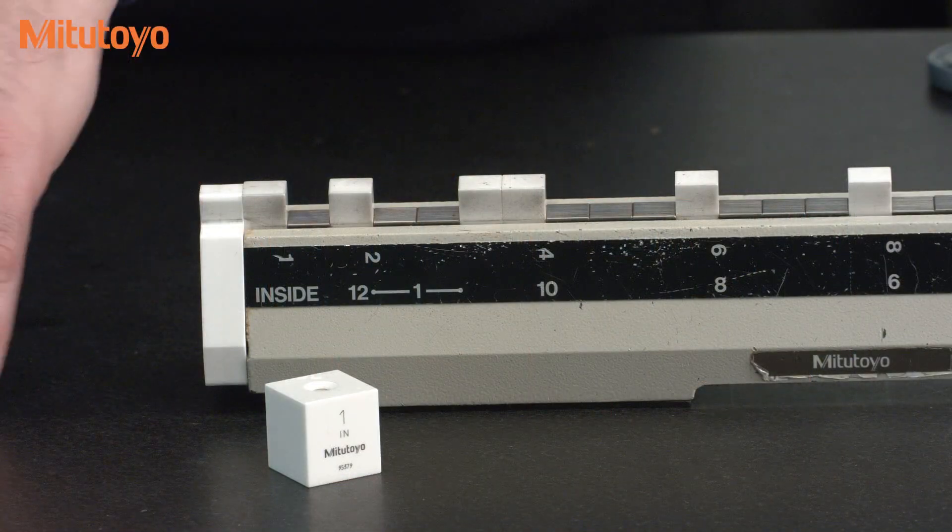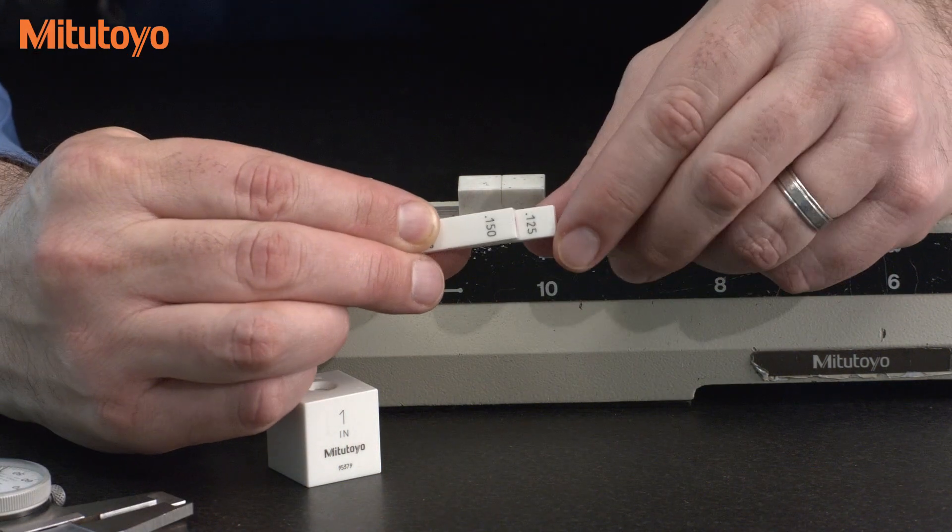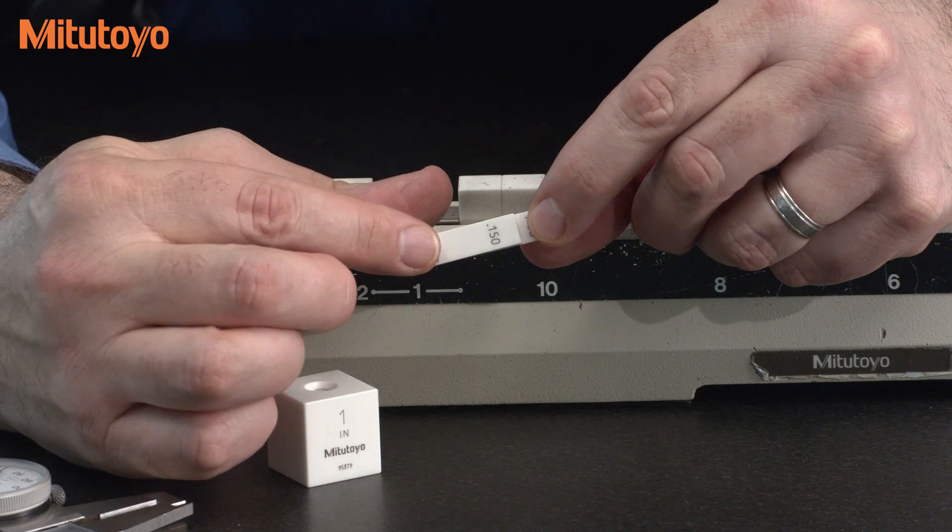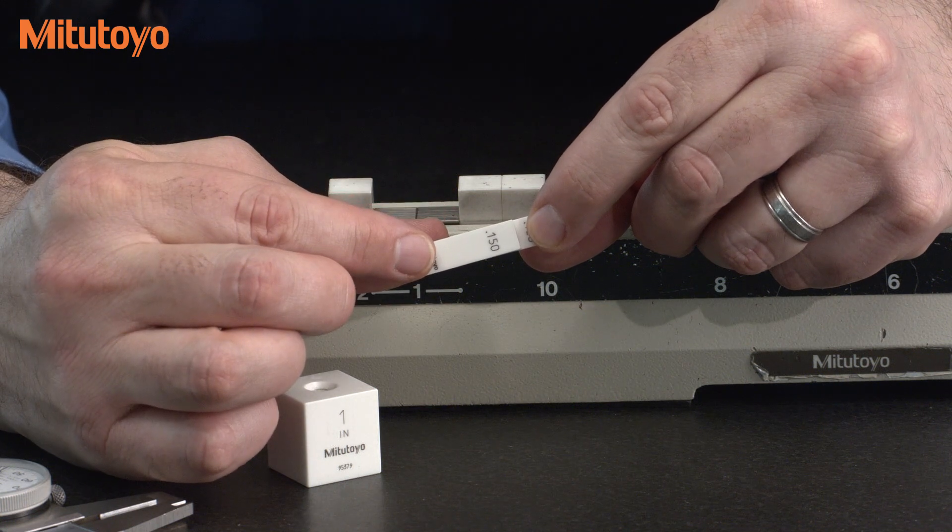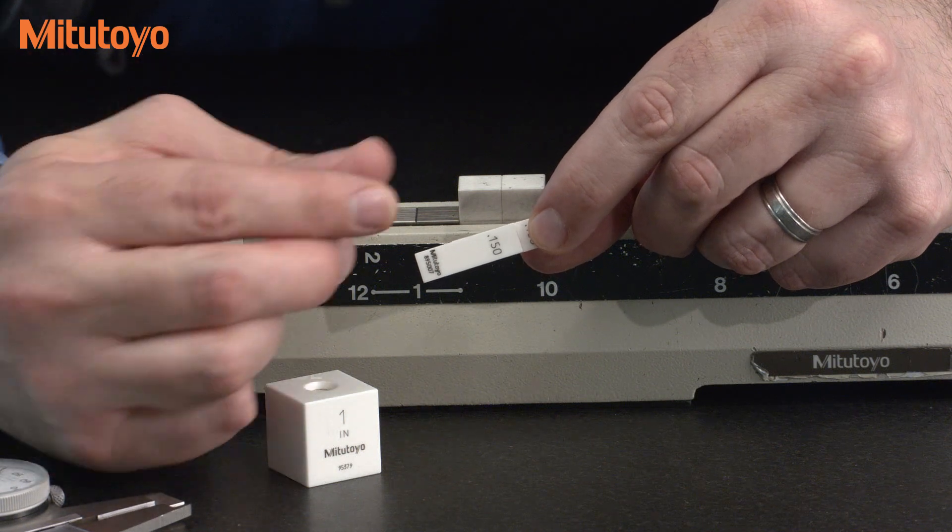So for an example, I have two gauge blocks that are rung together here. So this is a 125 gauge block, and this is a 150 gauge block. These are standard blocks from any set of gauge blocks, so most people have these.